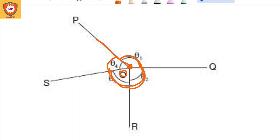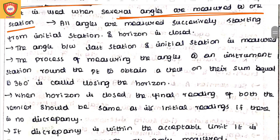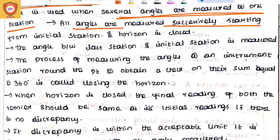So if we start the angle at the station, we will start the angle of the station. All angles are measured successfully starting from the initial station and the horizon is closed. When the station started, you can calculate the angle of the station and the right angle of the station.